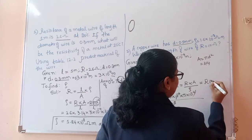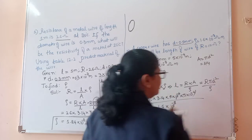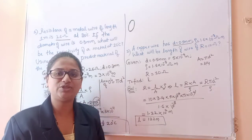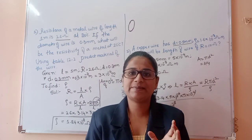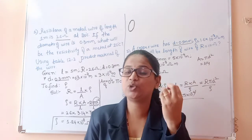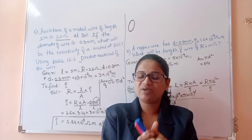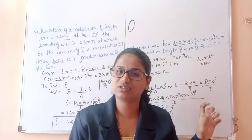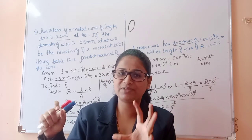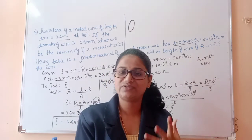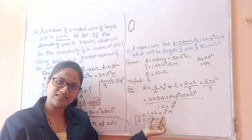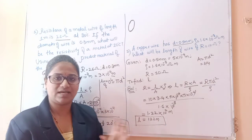The formula to use here is L = R × π D² / ρ. This is how to solve numerical problems step by step: first write the given values, then write what you have to find, then write the suitable formula, solve for the value, and write the simplified answer — since most answer keys give the simplified form.